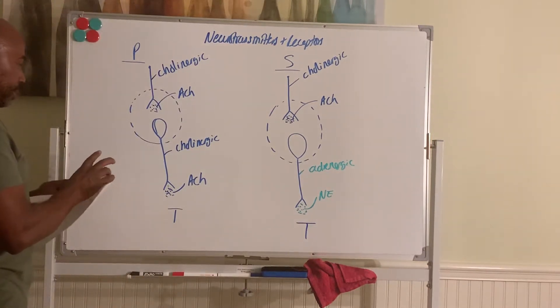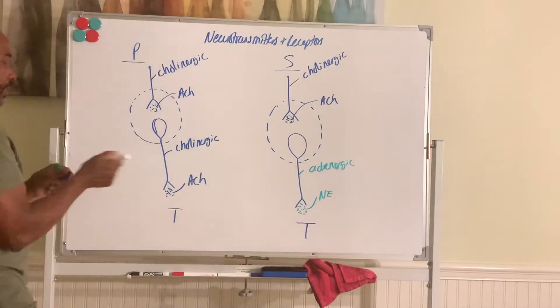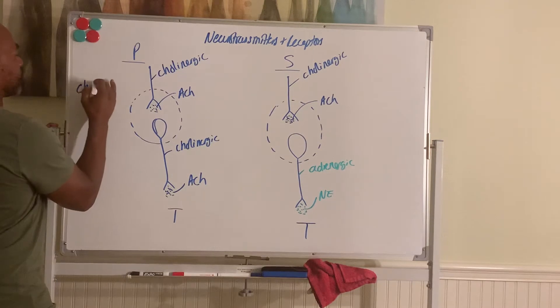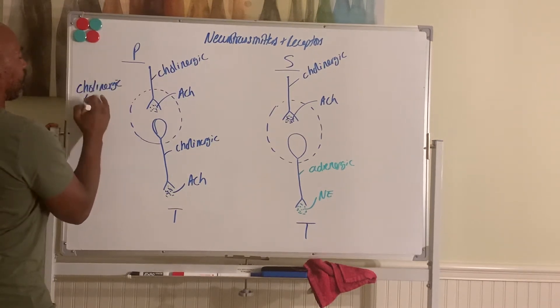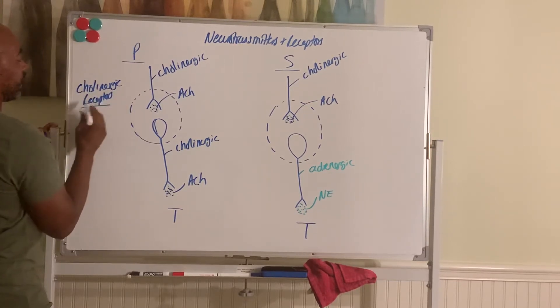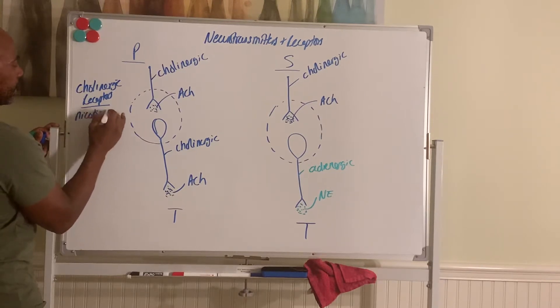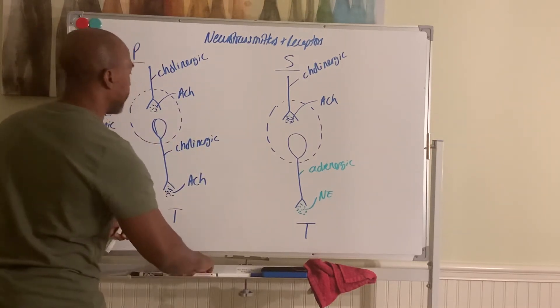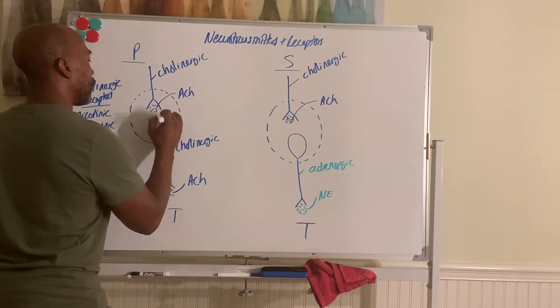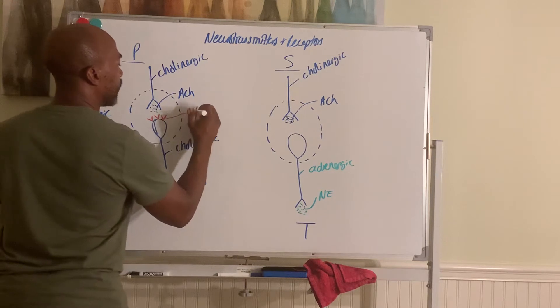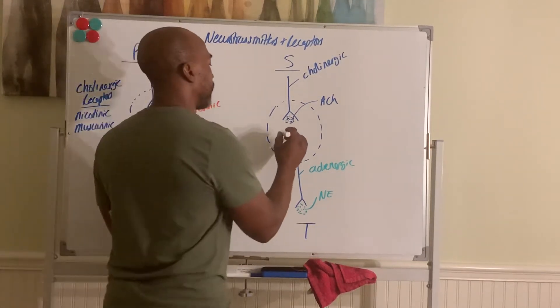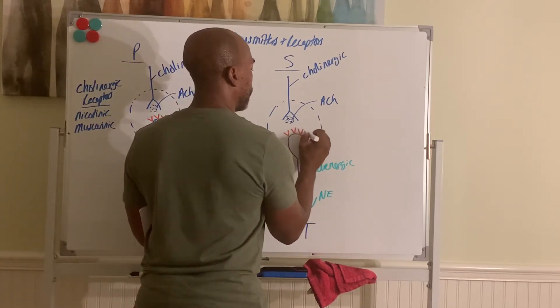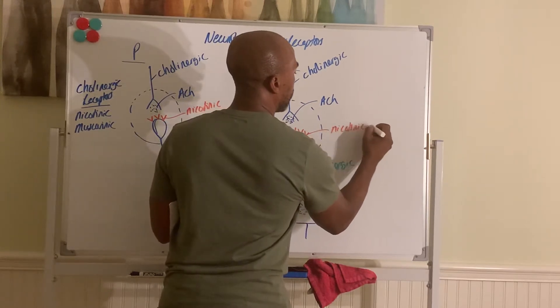Now let's look at the receptors. So the receptors that respond to ACH are called your cholinergic receptors. And they come in two types. Cholinergic receptors are either nicotinic or muscarinic. At, in the ganglia, the receptors there that respond to ACH, those receptors are examples of nicotinic receptors. Same here. Those are receptors that respond to ACH, nicotinic receptors.